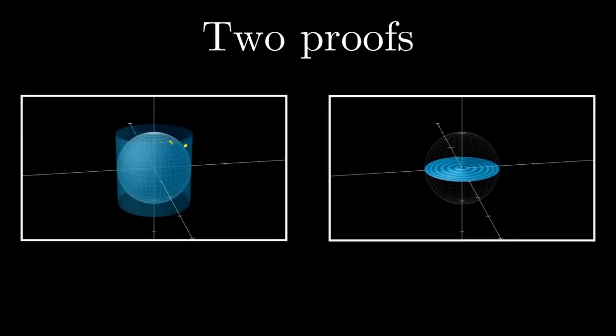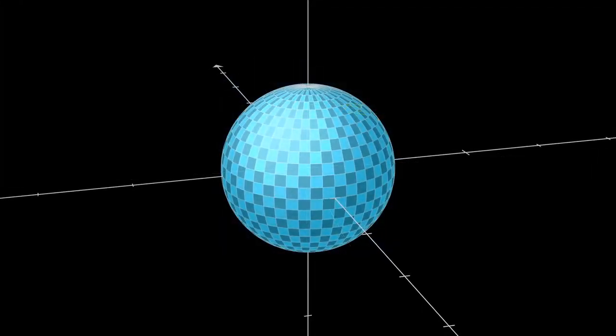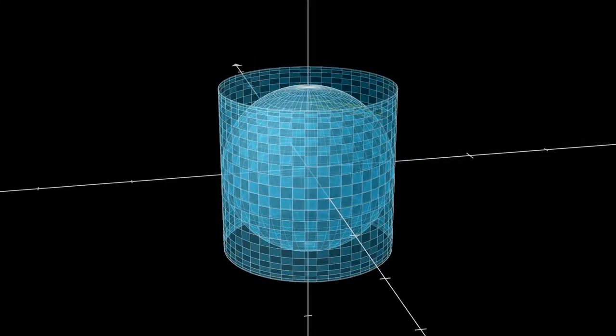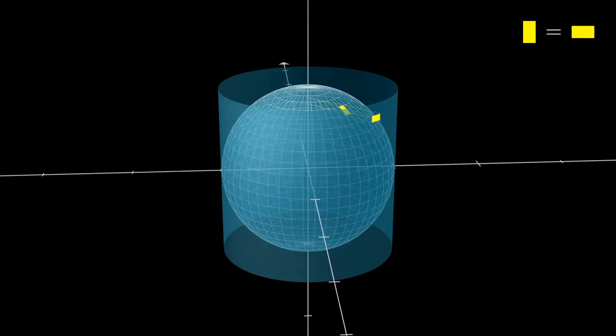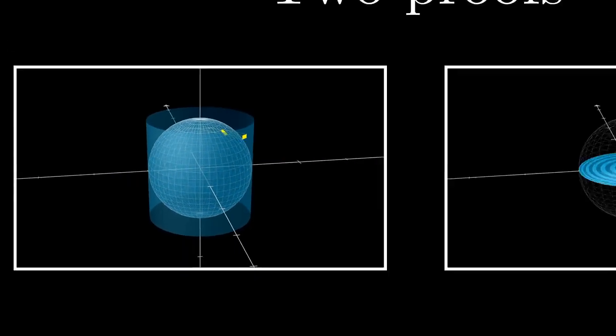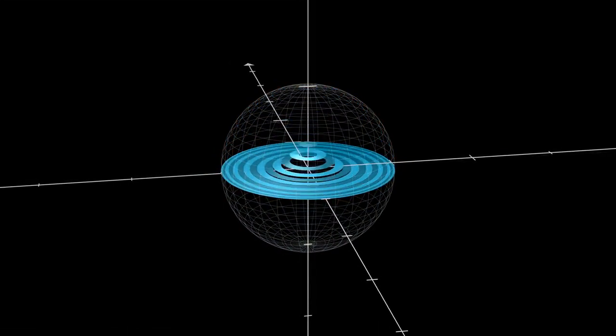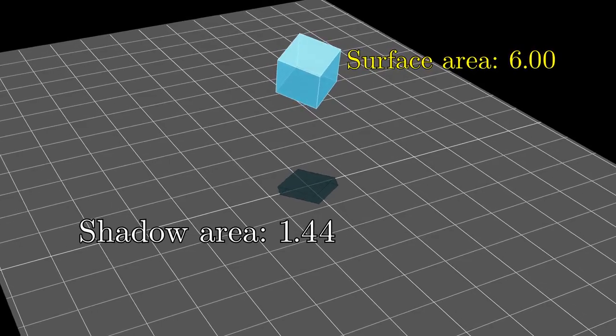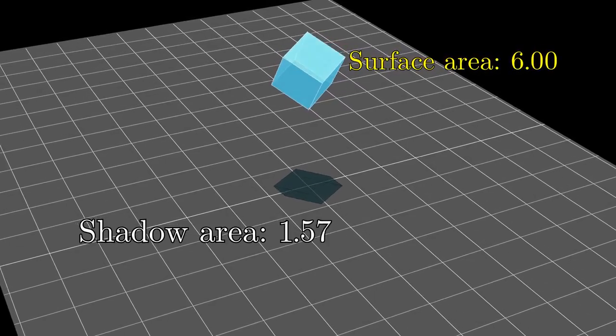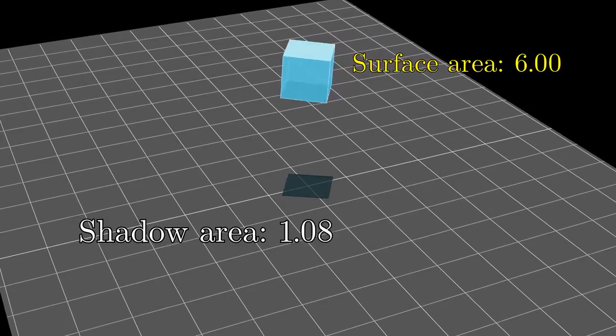Nevertheless, I would like to show you two separate ways of thinking about the surface area that connect it in a satisfying way to these circles. The first comes from a classic, one of the true gems of geometry that I think all math students should experience the same way all English students should read at least some Shakespeare. The second line of reasoning is something of my own, which draws a more direct line between the sphere and its shadow. And lastly, I'll share why this fourfold relation is not unique to spheres, but is instead one specific instance of a much more general fact for all convex shapes in three dimensions.